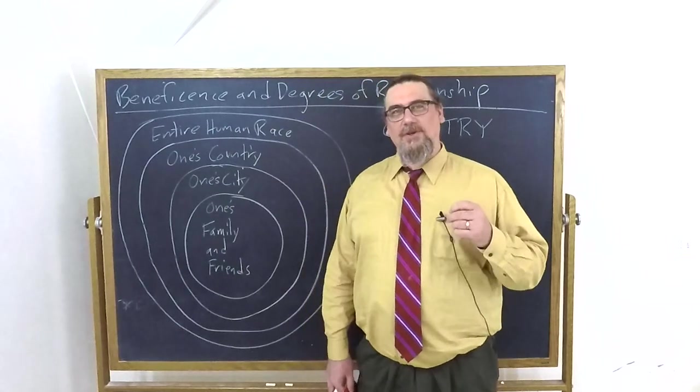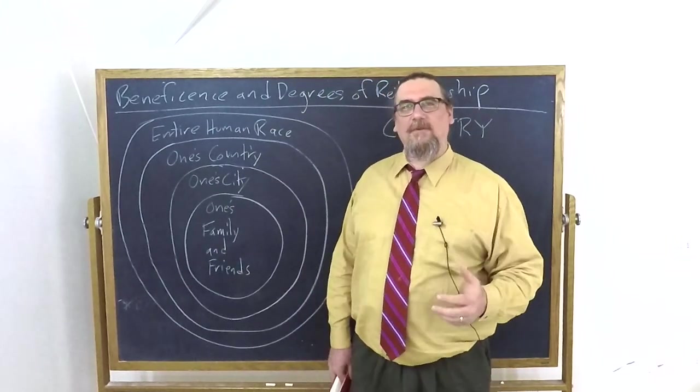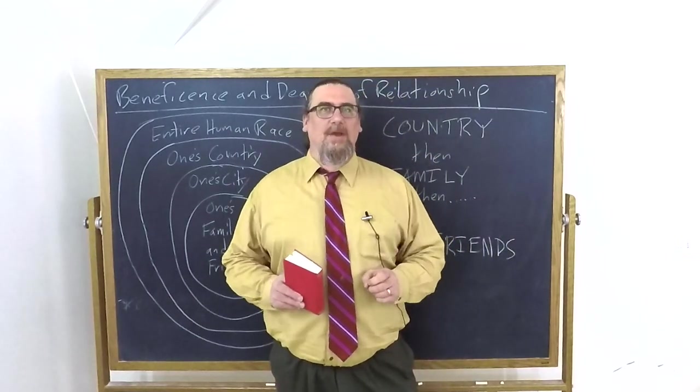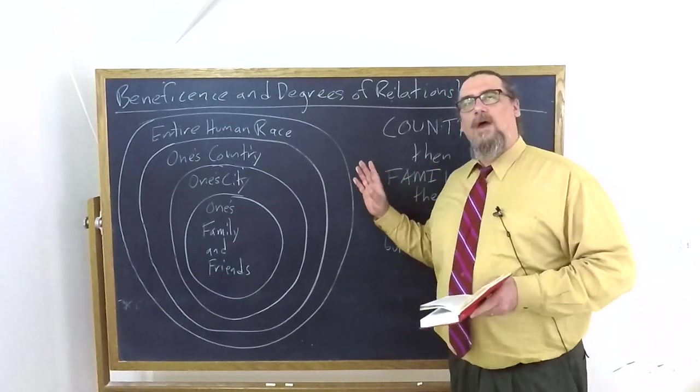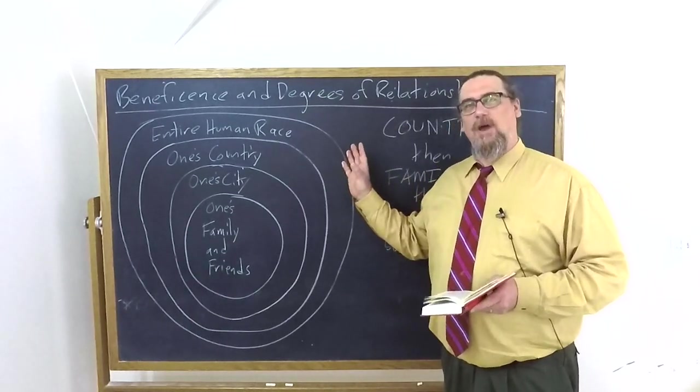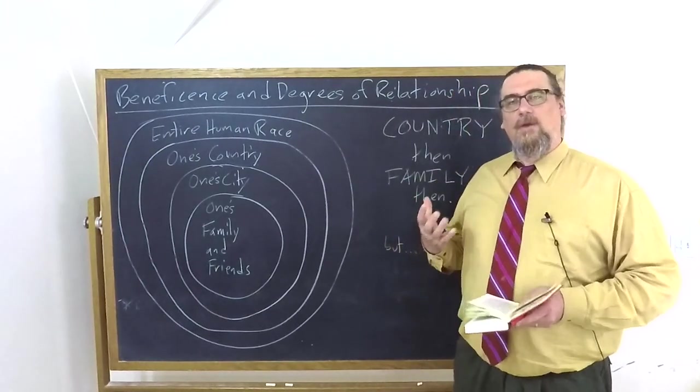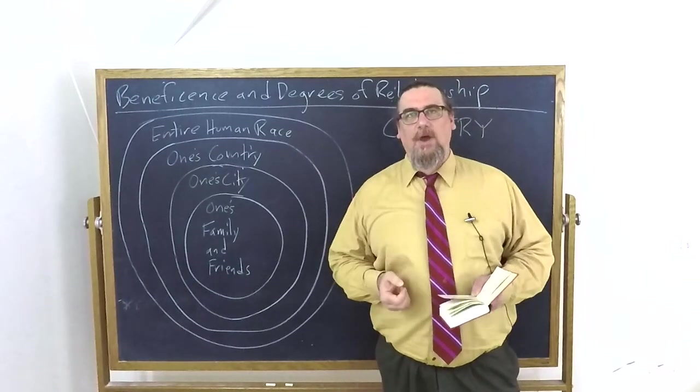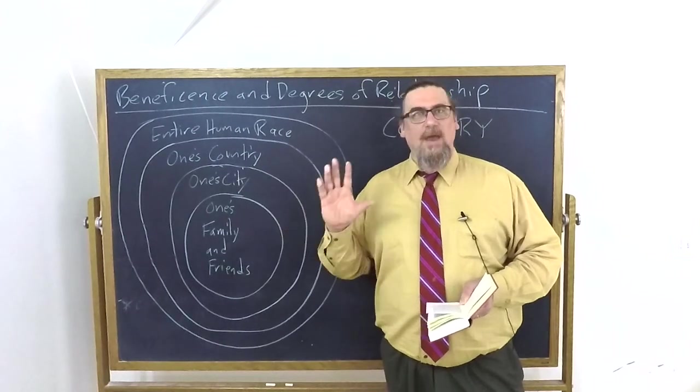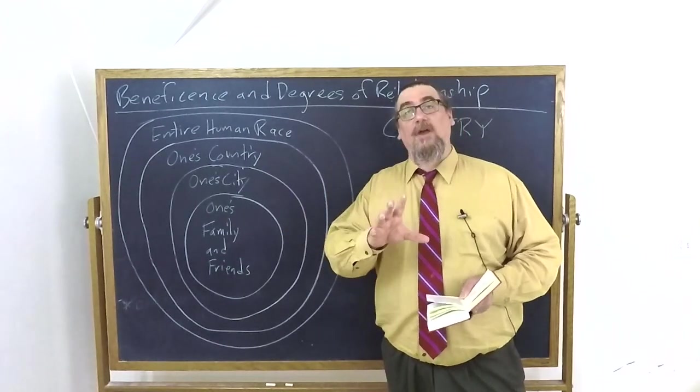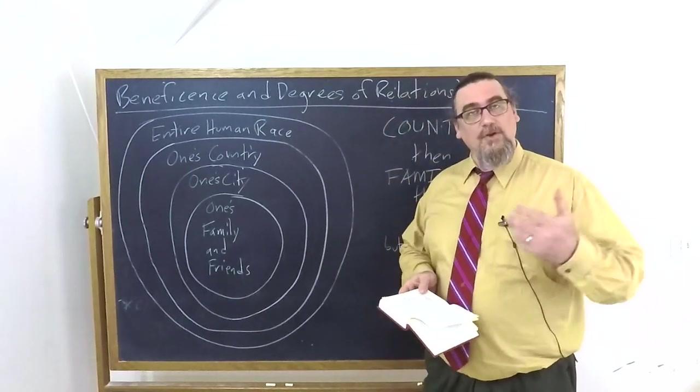In the course of his discussion of the second main part of justice, that is benevolence or beneficence, in his work on duties, Cicero is going to talk about degrees of relationship, degrees of closeness to us, and what is really required of us in terms of doing good to other people, going beyond the strict requirements of justice itself and showing benevolence or generosity or moral goodness to them, maybe even showing charity.